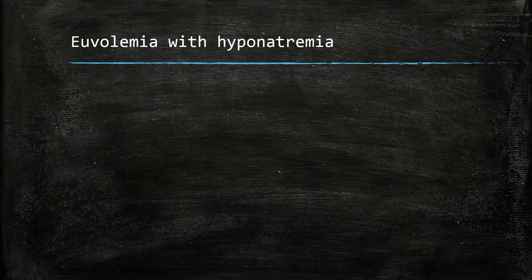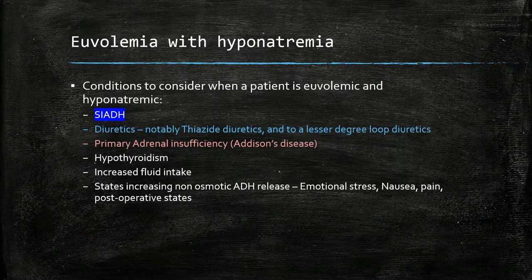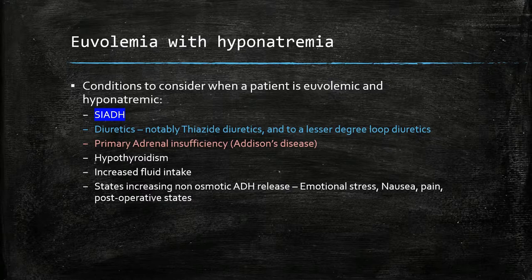For a euvolemic patient presenting with hyponatremia, we have to consider SIADH. Diuretics — notably thiazide diuretics and to a lesser degree loop diuretics — can cause this. It is important to check the drug list of any hyponatremic patient as drugs commonly cause the condition. Addison's disease should be considered, presenting with hyponatremia, hyperkalemia, and acidosis. Hypothyroidism and increased fluid intake can also cause this, and factors such as emotional stress, nausea, pain, and post-operative states lead to non-osmotic release of ADH.